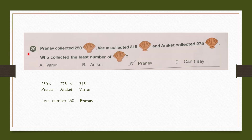Question number 29: Pranav collected 250 shells, Varun collected 315 shells, and Aniket collected 275 shells. Who collected the least number of shells? In ascending order: 250, 275, 315. The minimum is 250, collected by Pranav. So our answer is option C, Pranav.